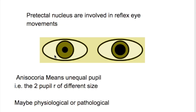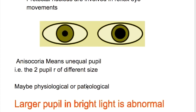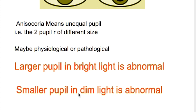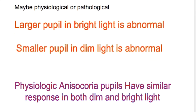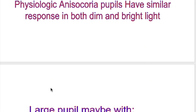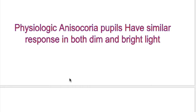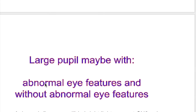How do we differentiate which pupil is abnormal - the smaller or the larger? A larger pupil in bright light is abnormal, and a smaller pupil in dim light is abnormal. In physiologic anisocoria, pupils have a similar response in both dim and bright light - their diameter ratio remains the same in both conditions.